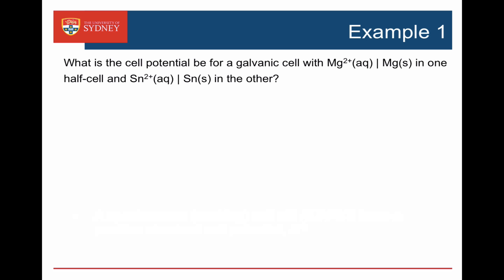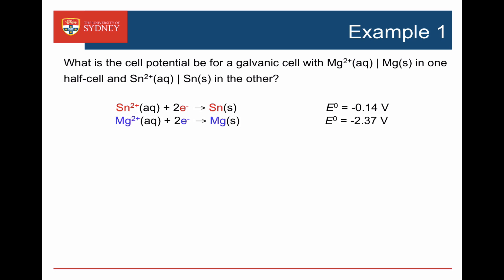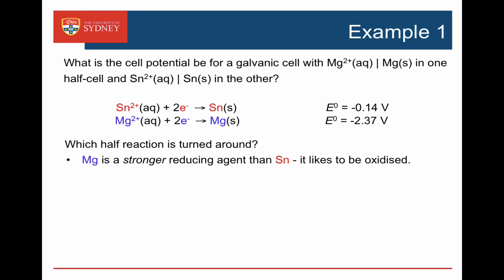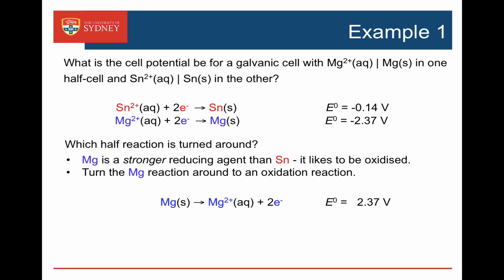Let's do a couple of examples. What is the cell potential for a galvanic cell with a magnesium 2+/magnesium half cell and a zinc 2+/zinc half cell? We look at the reduction half cell potentials in the table: for zinc 2+ it's minus 0.14, but for magnesium 2+ it's minus 2.37. We turn around the one which is lower in the table — more negative or less positive — which is the magnesium, the stronger reducing agent. Its reduction potential is minus 2.37, so we turn it around and it becomes the oxidation reaction: magnesium metal goes to magnesium 2+ plus 2 electrons, with an oxidation potential of plus 2.37.